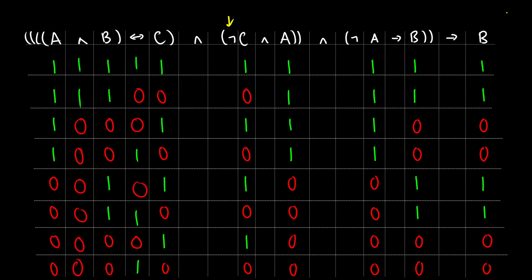Let's do not C. This just takes the values of C and flips them. So one zero one zero one zero one zero is going to become zero one zero one zero one zero one. That's a nice straightforward column.